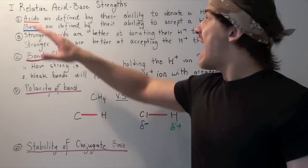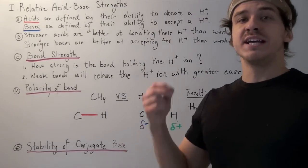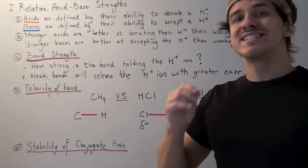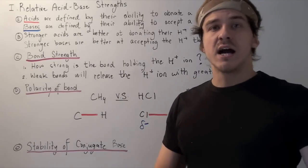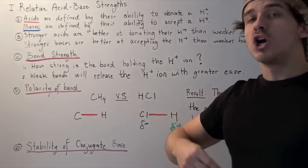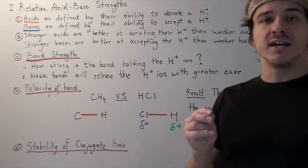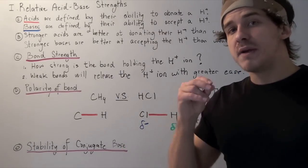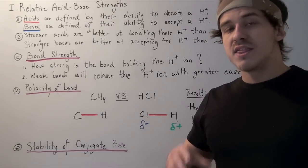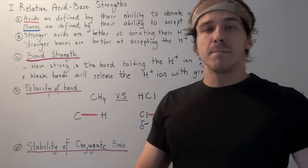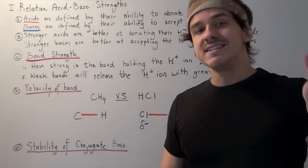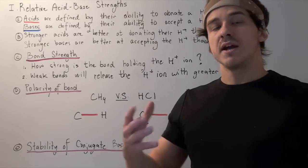According to that definition, acids are defined by their ability to donate an H-plus ion, while bases are defined by their ability to accept an H-plus ion. So what makes a compound X a better acid than a compound Y? Stronger acids are better at donating that H-plus ion than weaker acids are. And stronger bases are better at accepting that H-plus ion than weaker bases. That means the reason that compound X is a better acid than compound Y is because compound X releases that H-ion with greater ease compared to compound Y.